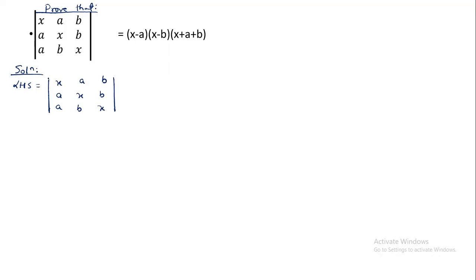We will use property number seven — we will apply a column operation. In the first column: C1 implies C1 plus C2 plus C3.